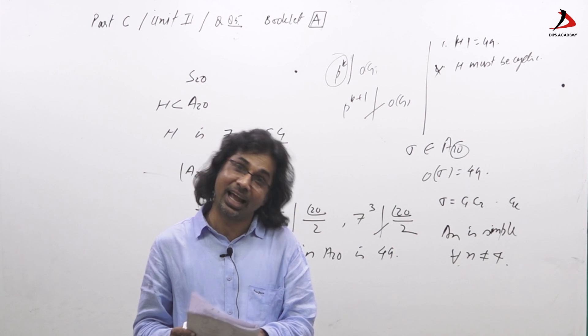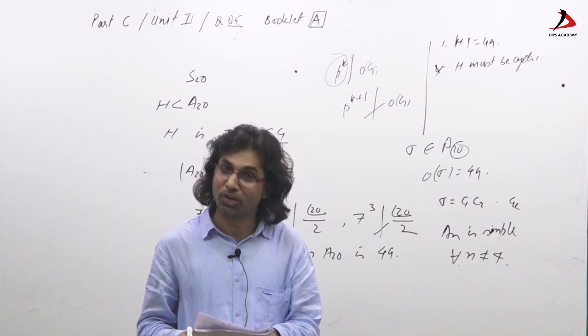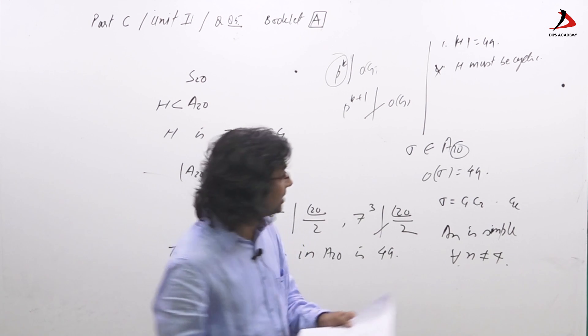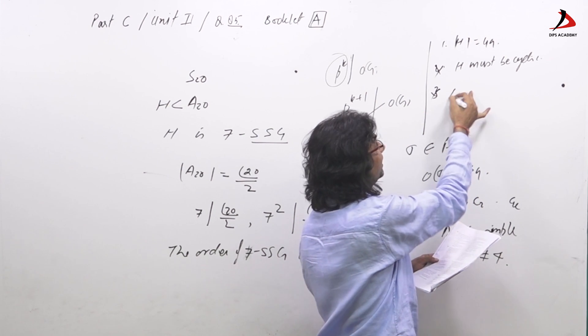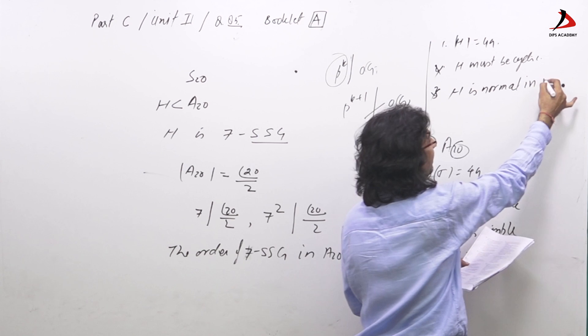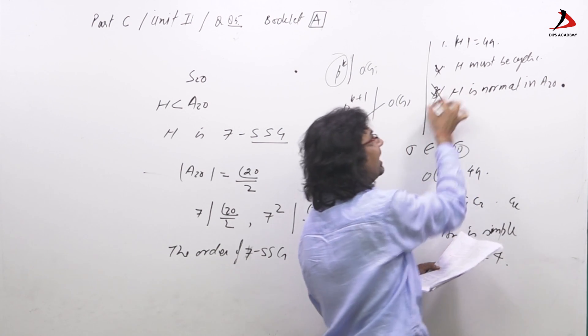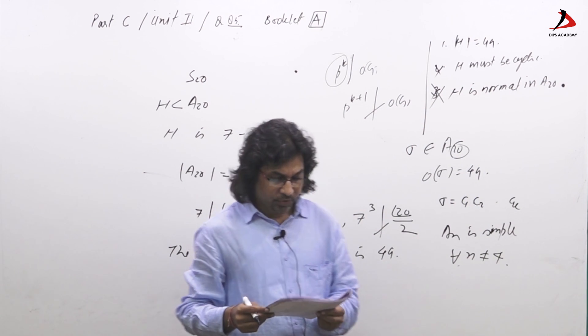Simple means cannot have proper normal subgroup. So A_20 has to be simple. So H cannot be normal. So answer 3 is also not correct - option 3, that H is normal in A_20, is incorrect.